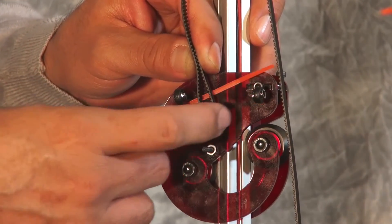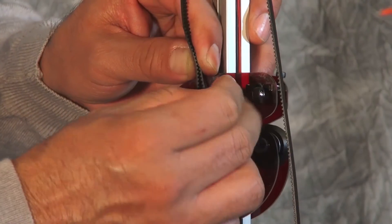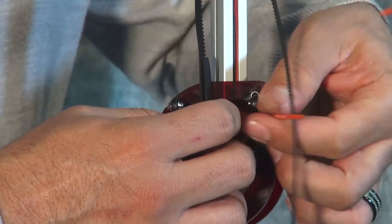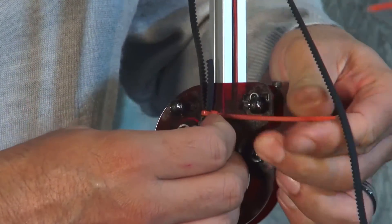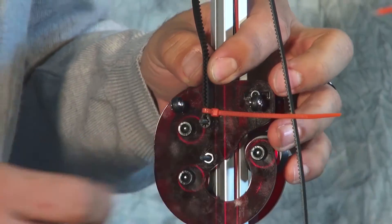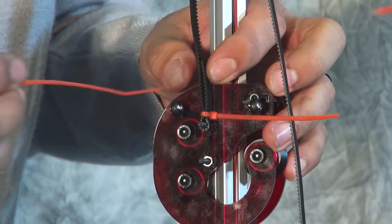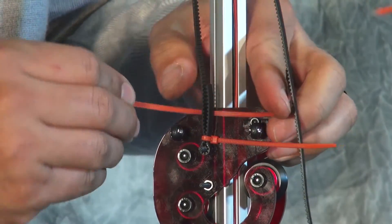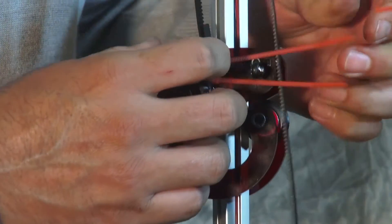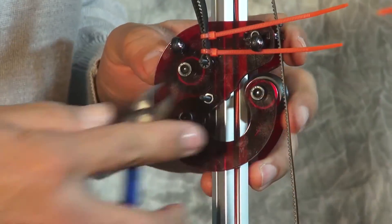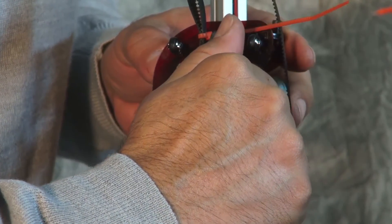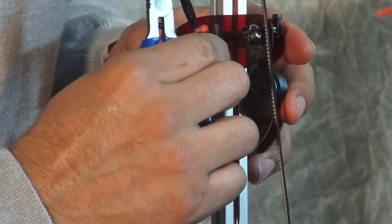We're going to pull a zip tie through and secure it on the lower end of the belt. Now you can use one or two zip ties. I prefer to use two, so I'm adding this top zip tie just for extra security. Use one or two and then clip off the excess with some wire cutters, being careful not to cut the belt. And there you go, secured belt.